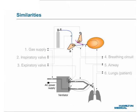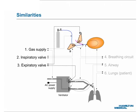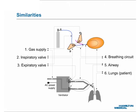The balloon model is highly comparable to a real ventilator system. One: the cylinder corresponds to the high-pressure gas supply provided for the ventilator system. Two: hand A corresponds to the inspiratory valve. Three: hand B corresponds to the expiratory valve. Four: the blue and pink tubes between the Y-piece and the two hands correspond to a breathing circuit. Five: the blue tube piece between the Y-piece and the balloon corresponds to the airway. Six: the balloon corresponds to the lungs of a ventilated patient.